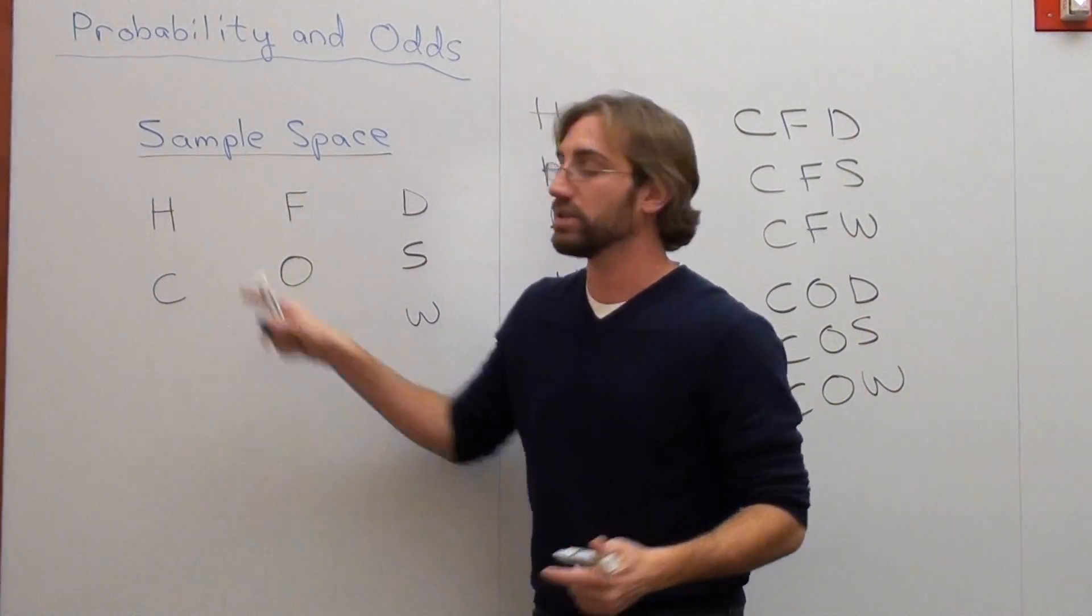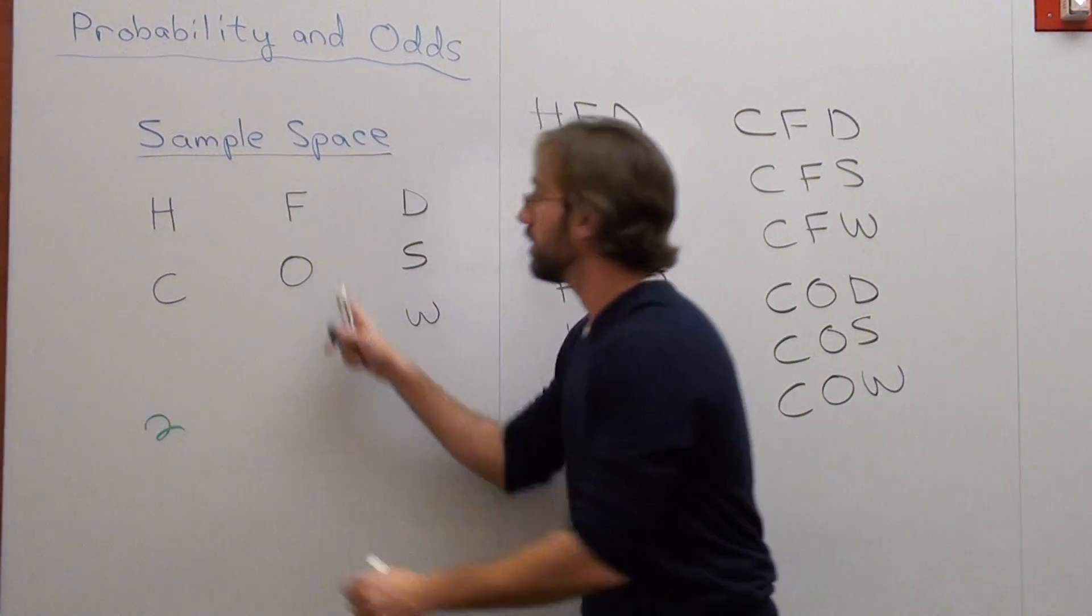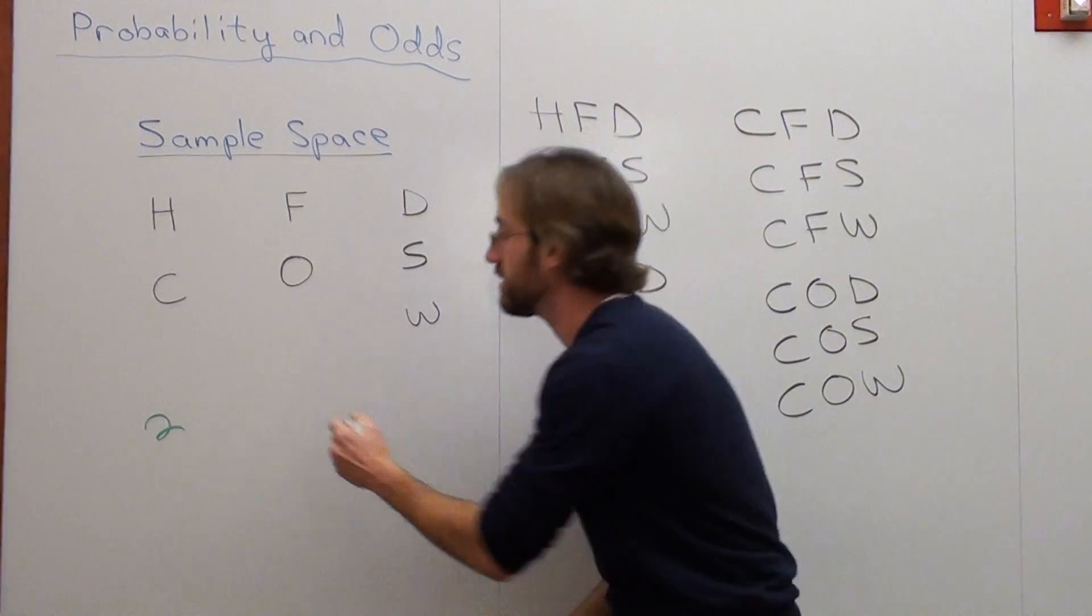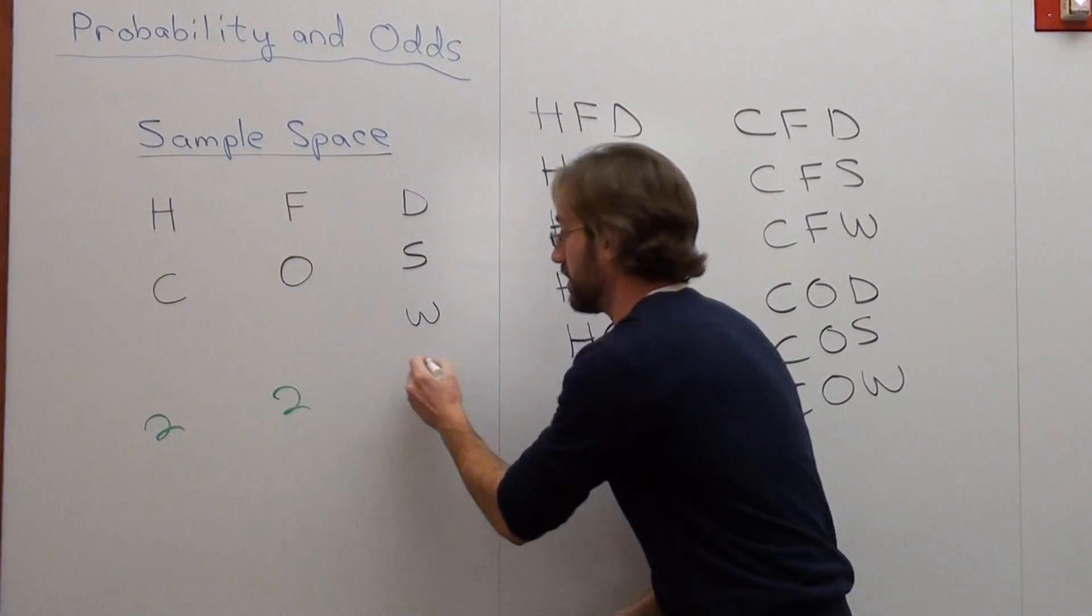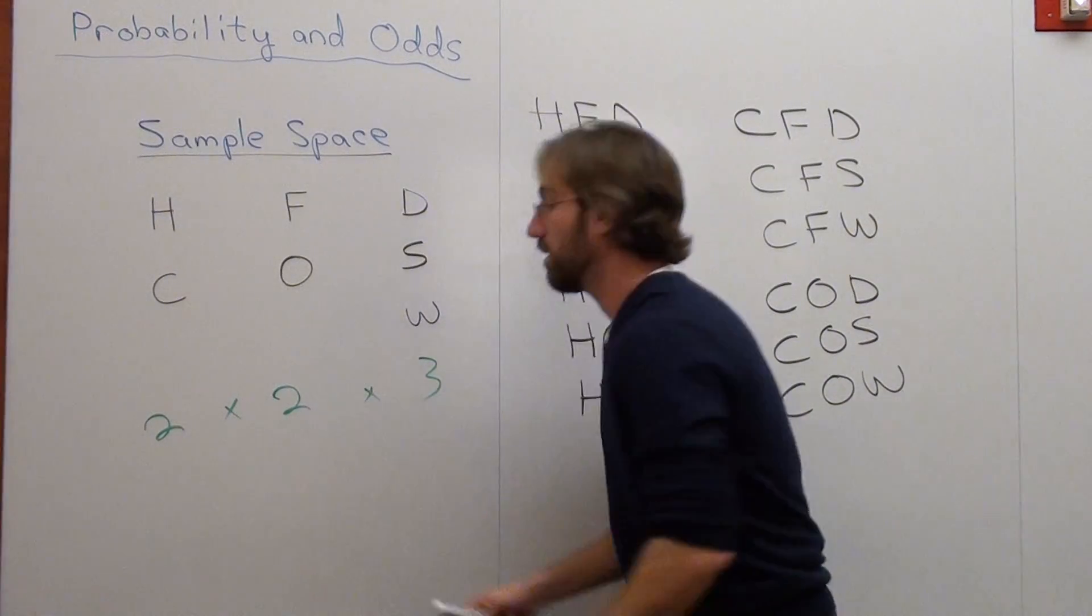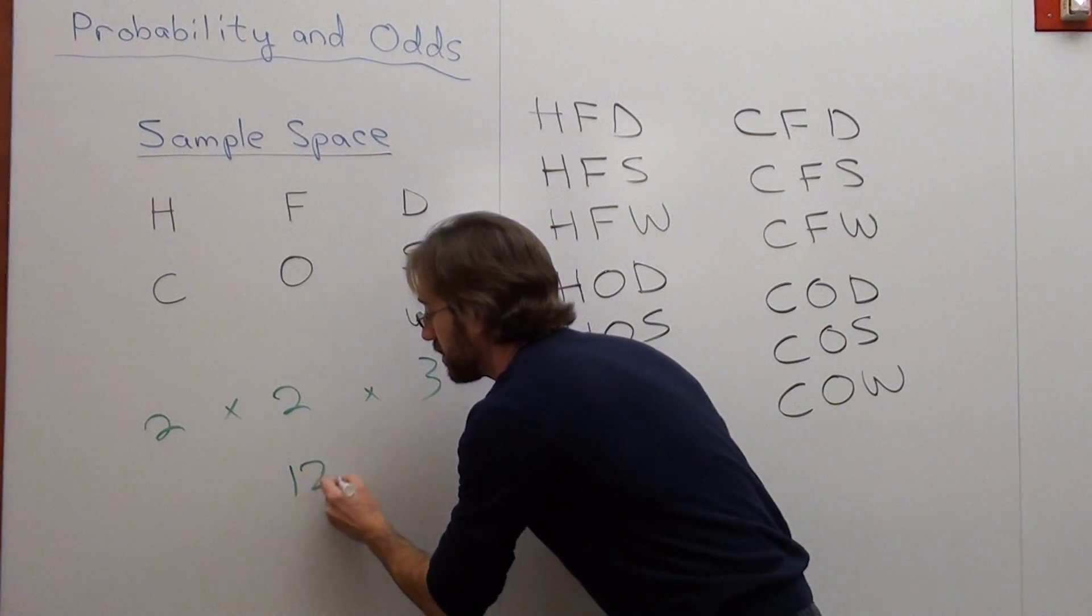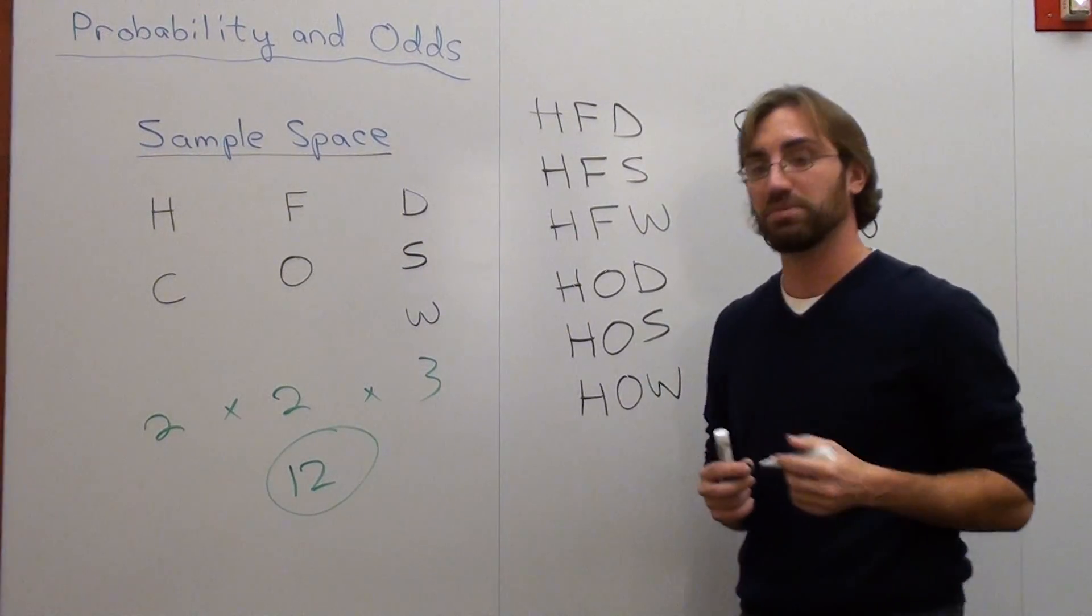Now there is a much easier way to do this. There's two sides. So you take two main entrees, times two sides, and there's three of these. Multiply them all together. Two times two times three is twelve. Much simpler way to do that.